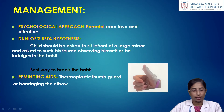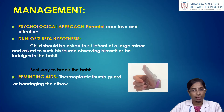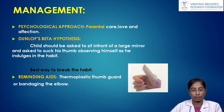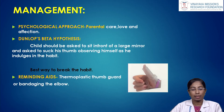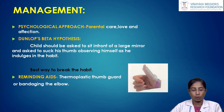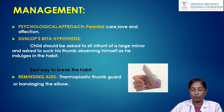Management of thumb sucking: the foremost approach is psychological — providing parental care, love, and affection. The Dunlop Beta hypothesis involves making the child sit in front of a large mirror and asking the child to suck their thumb while observing themselves — this is considered the best way to break the habit. Reminding aids such as thermoplastic thumb guards or bandaging of the elbow also remind the child to withdraw from the habit.